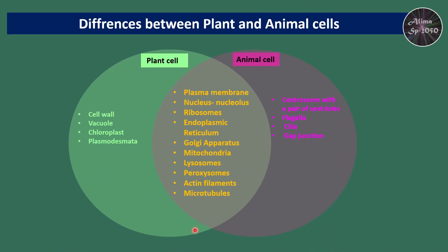The main differences between plant and animal cells are the organelles and elements found in one but not the other. In plant cells, we can find the cell wall, vacuole, chloroplast, and plasmodesmata — but not in animal cells. In animal cells, we can find the centrosome with a pair of centrioles, flagella, cilia, and gap junctions — but not in plant cells. However, the elements in the middle of the comparison are common to both plant and animal cells.